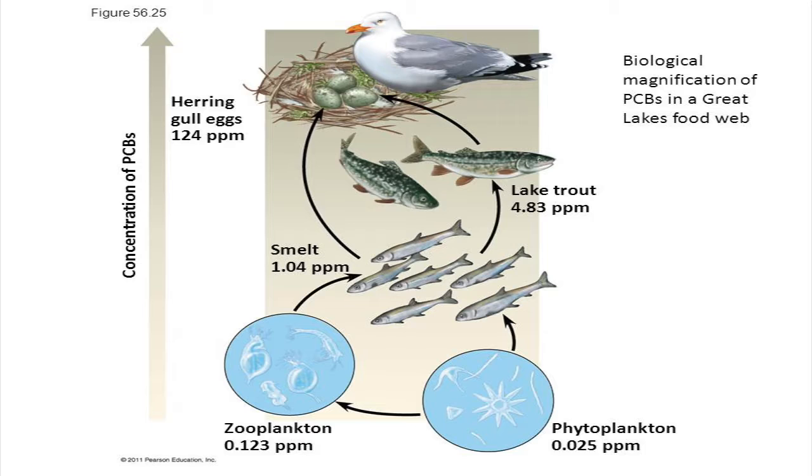So at the lowest level of phytoplankton, we'll say that there's a concentration of 0.025 parts per million of chemicals. But this exponentially increases as we climb higher through the hierarchy.